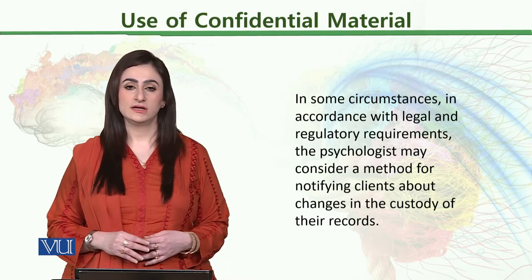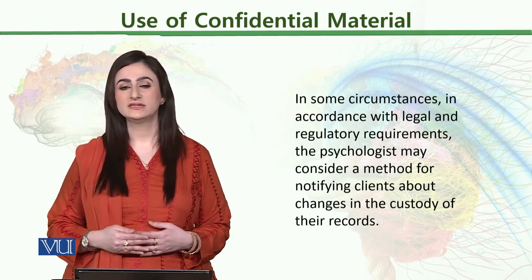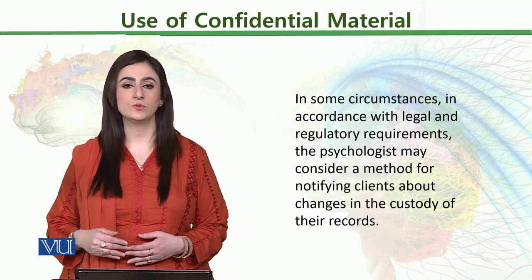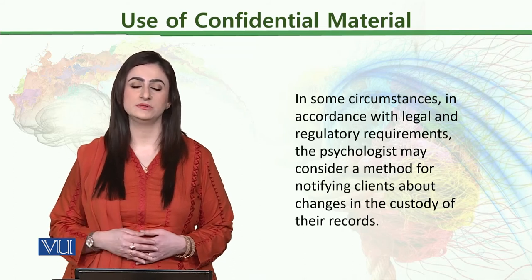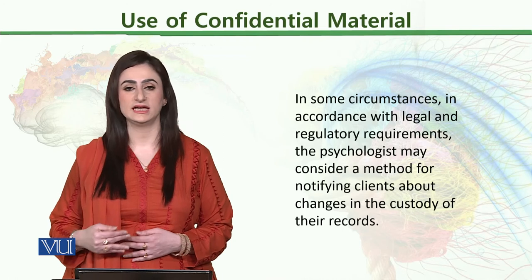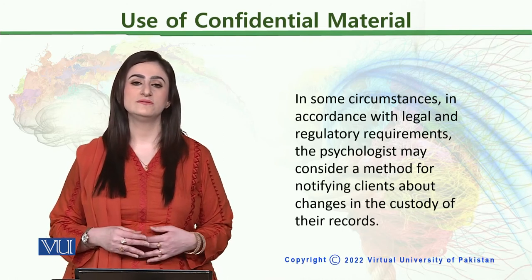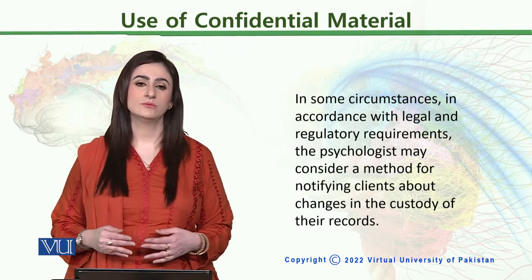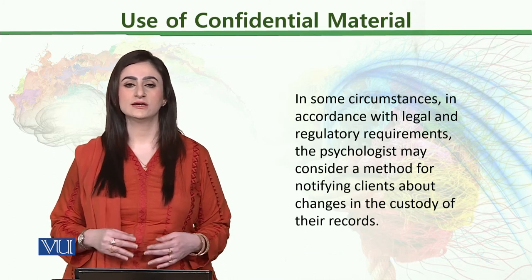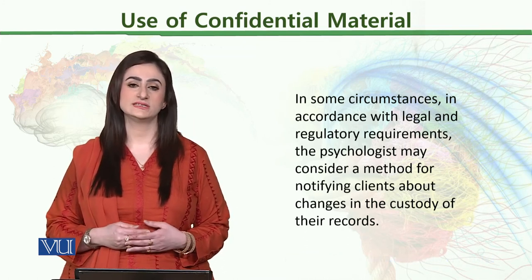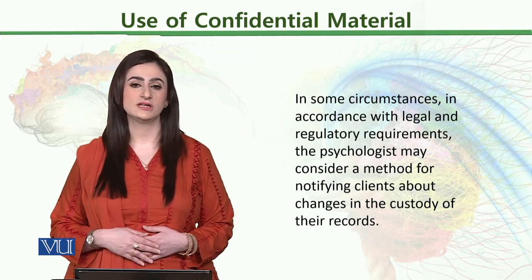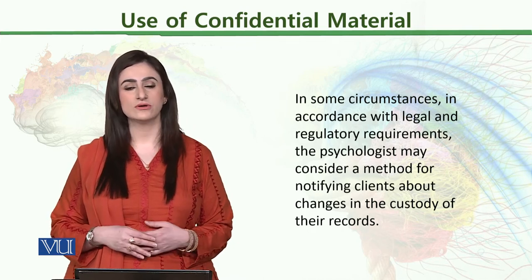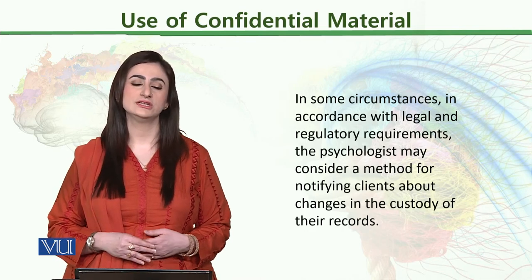Sometimes after removing identifiers from records, clients are also informed that a fake code has been assigned to identify their personal information, so that their identity is not revealed. The purpose of informing the client is that at any time, if the therapist or mental health professional is not present but the record exists and the client wants to access something, they can provide their code number to personally retrieve that information. This is how we can use confidential material in research and teaching purposes.